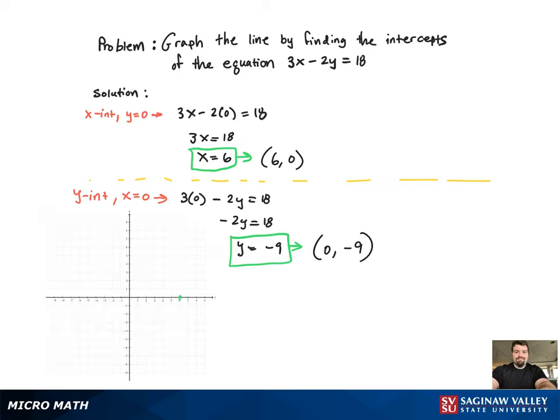Now we're just going to put the two intercepts on the graph. There's the x-intercept. There's the y-intercept. Now we're just going to connect the dots. And there you have it. That's the line.